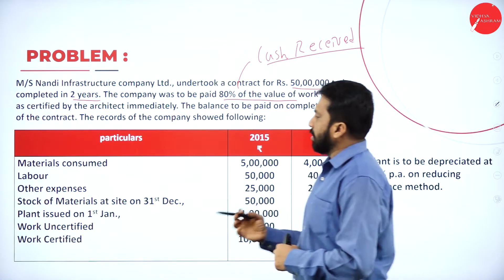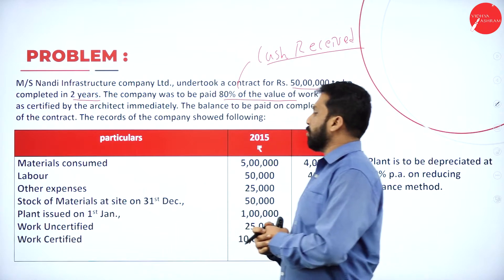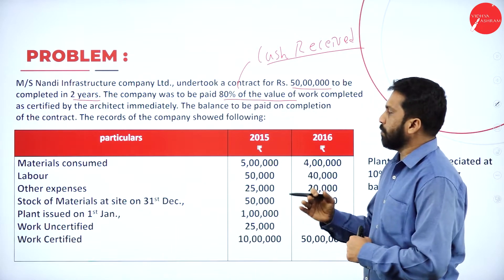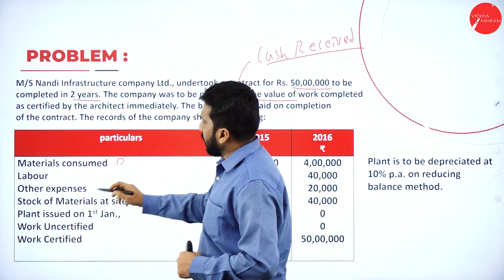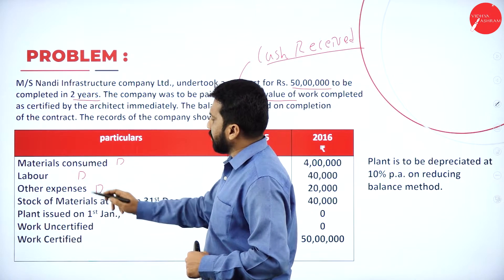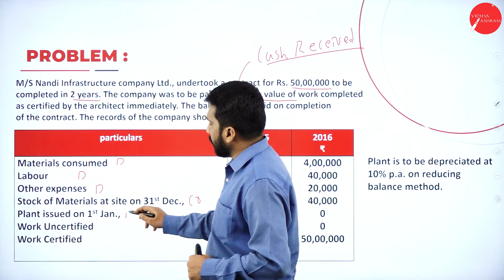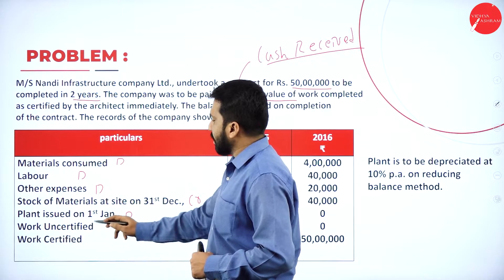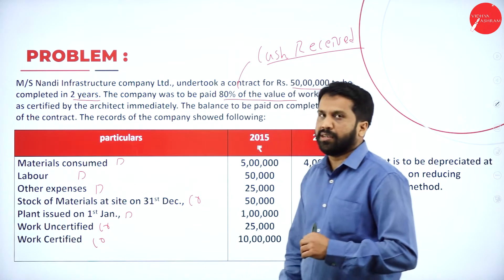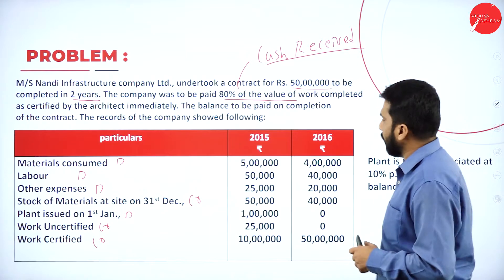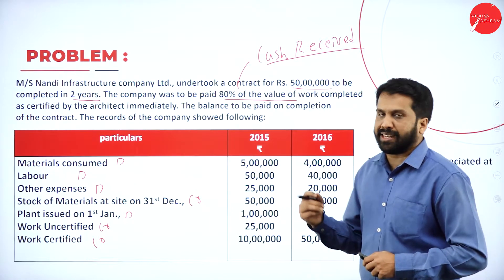The data given includes: material consumed, labor, other expenses, stock of material, plant, work certified, and work uncertified. Material consumed, labor, and other expenses are on the debit side. Work certified and work uncertified are on the credit side.